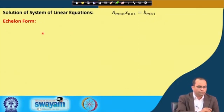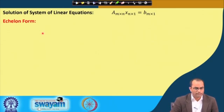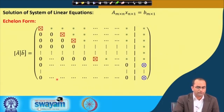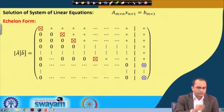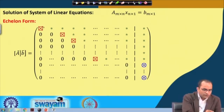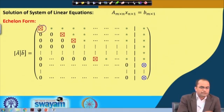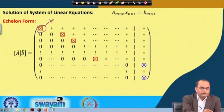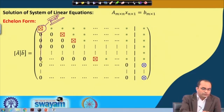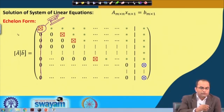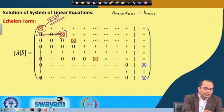So, what is this echelon form which we have introduced already in the previous lecture? In general it will have a particular form. The elements denoted by a special symbol here are the pivot elements — these are non-zero elements. What is the property of a pivot element? We call a number a pivot in this matrix when everything below it is 0 and it is the first non-zero element in its row — everything to the left is 0.